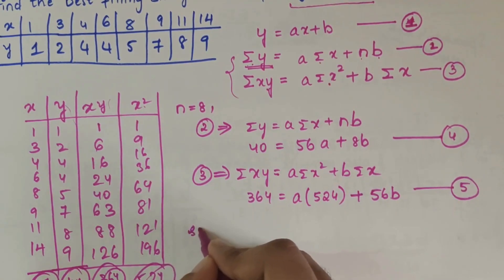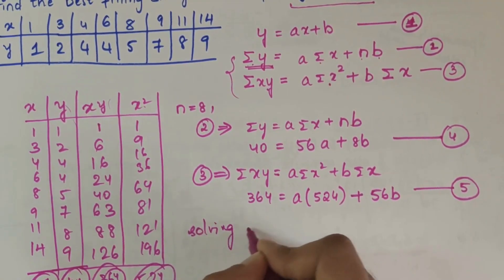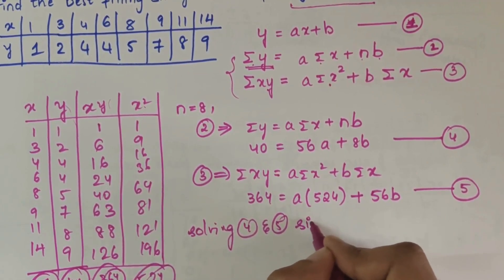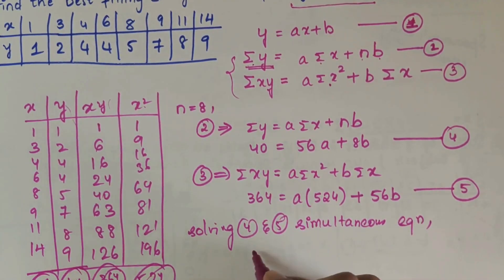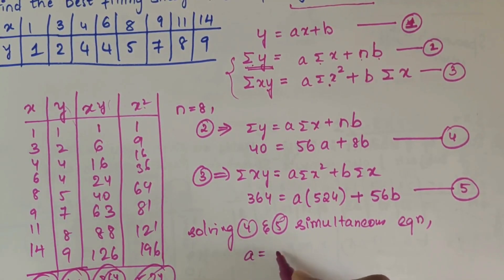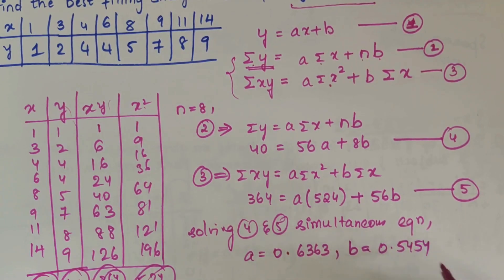Solving equations 4 and 5 simultaneously, we get the value of a as 0.6363 and b as 0.5454.